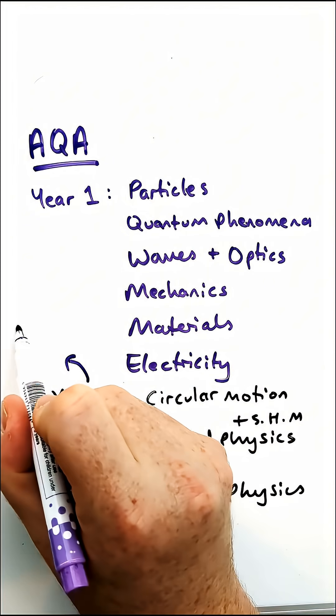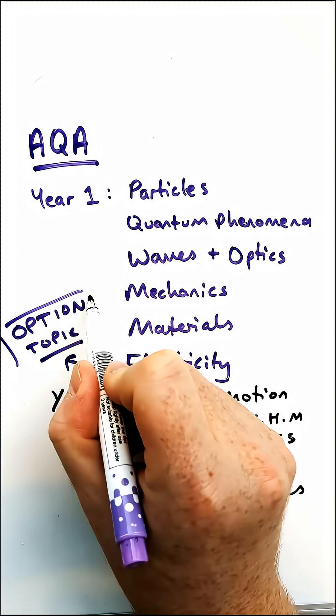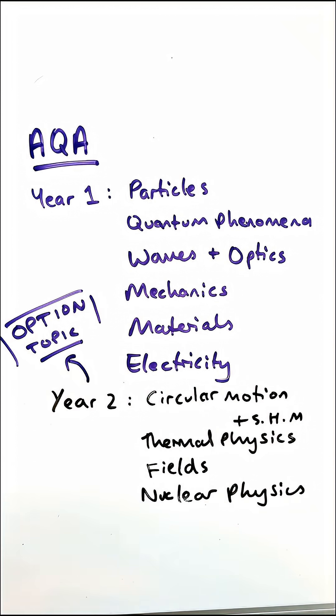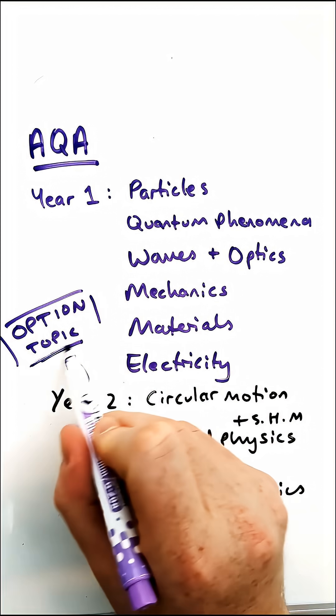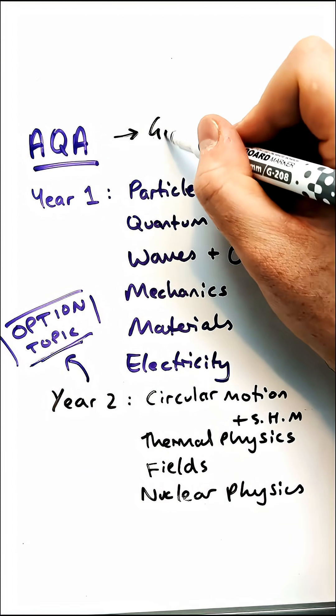All of those are quite advanced. There's quite a big step up between year one and year two. And in year two, if you do AQA, you'll also have an optional topic which is either space, engineering, turning points in physics, medical physics, or electronics.